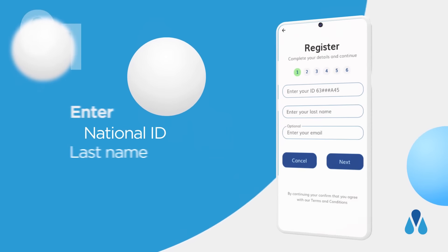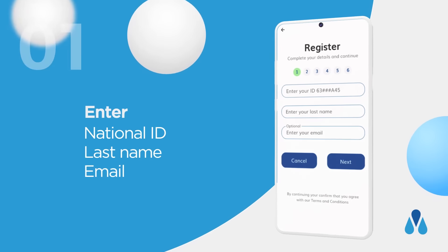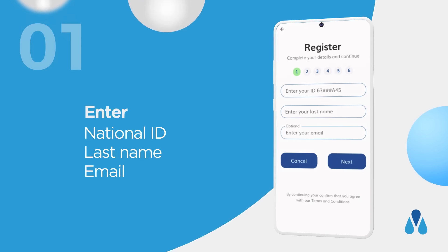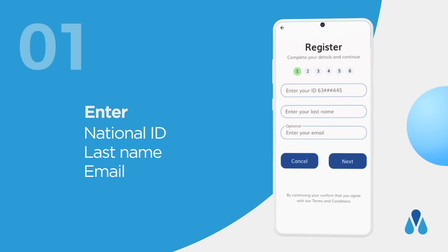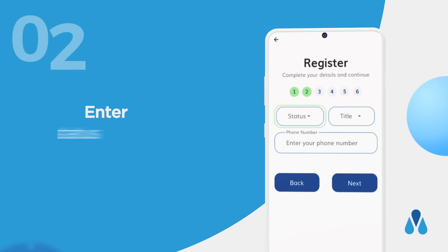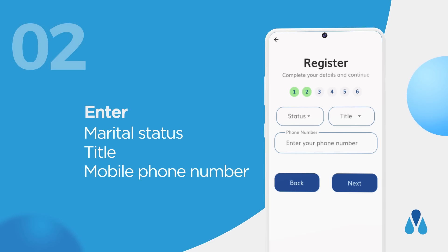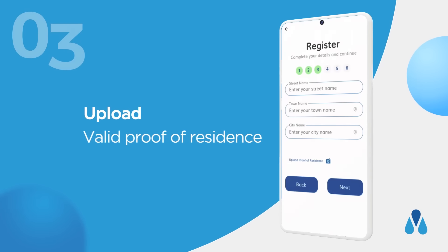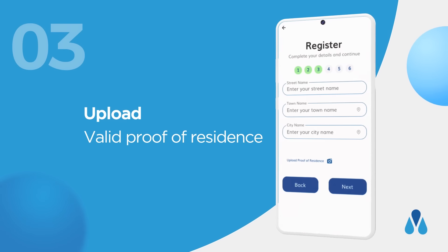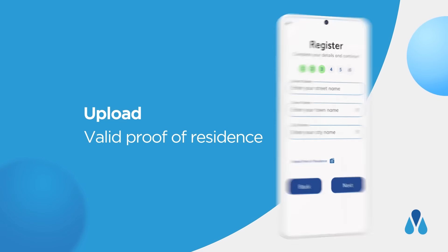Enter your National ID, last name, and email. Enter your marital status, title, and mobile phone number, then upload valid proof of residence.